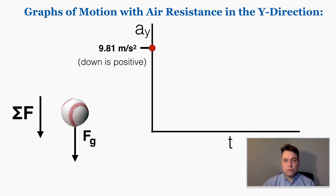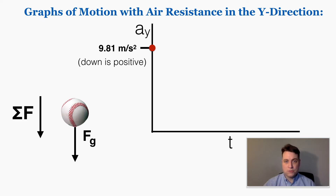In the instant it's dropped, it's accelerating down at 9.81 meters per second squared, because in that instant it doesn't have any velocity yet. So the only force acting on it is gravity, because no velocity means no air resistance upward. If the only force acting on it is gravity, that means it starts with 9.81 meters per second squared of acceleration.